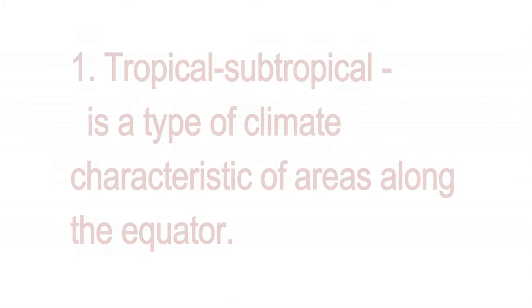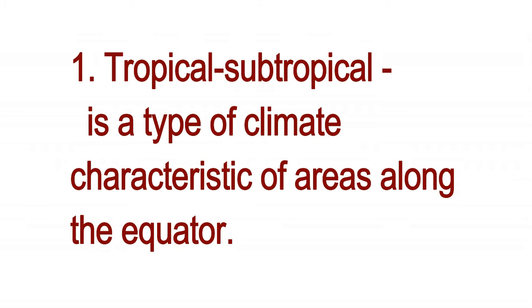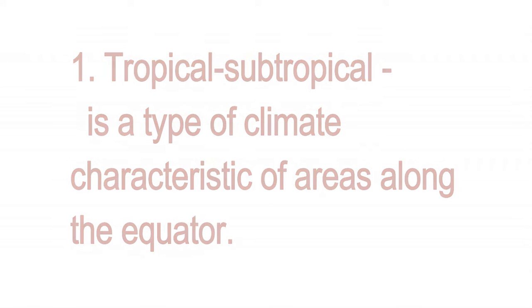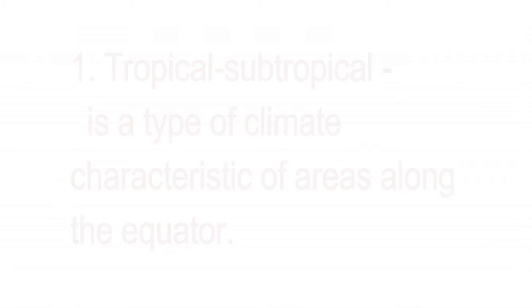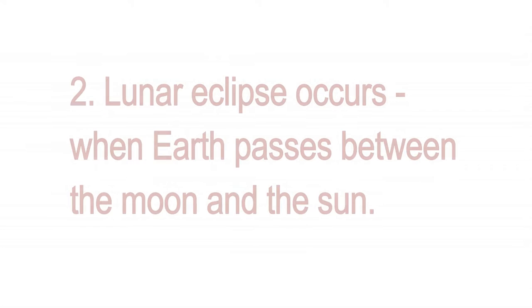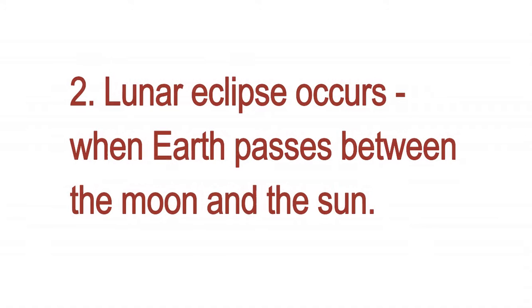One: tropical/subtropical is a type of climate characteristic of areas along the equator. Two: lunar eclipse occurs when earth passes between the moon and the sun.